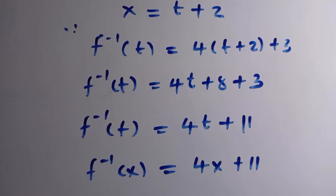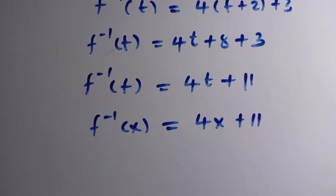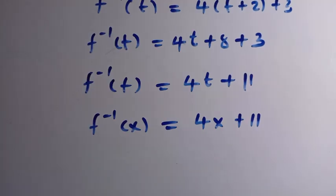Applying the same inverse-finding method as above, we get the same result: f of x equals (x minus 11) over 4. This is how to solve this problem. Thanks for watching, and don't forget to subscribe, like, and share. See you in the next class — never stop learning, bye bye.